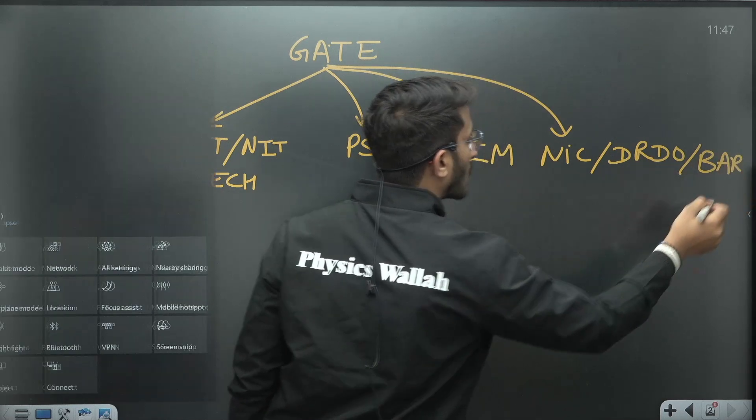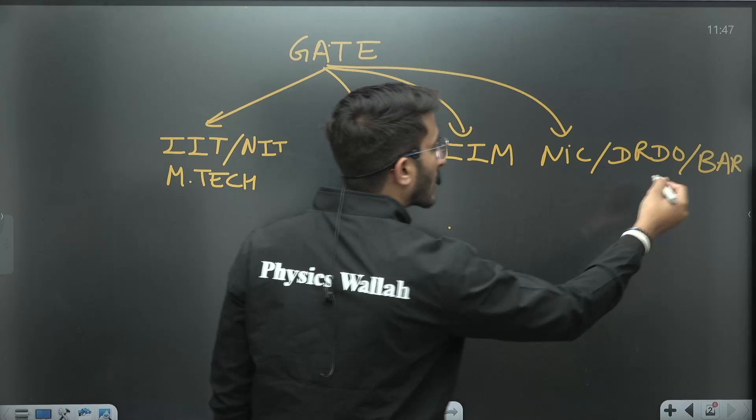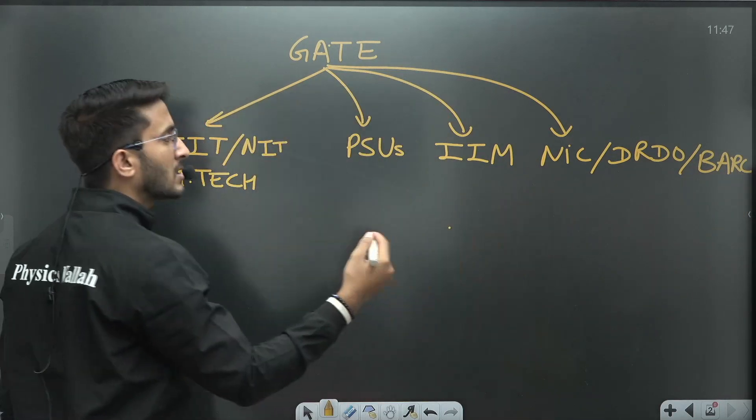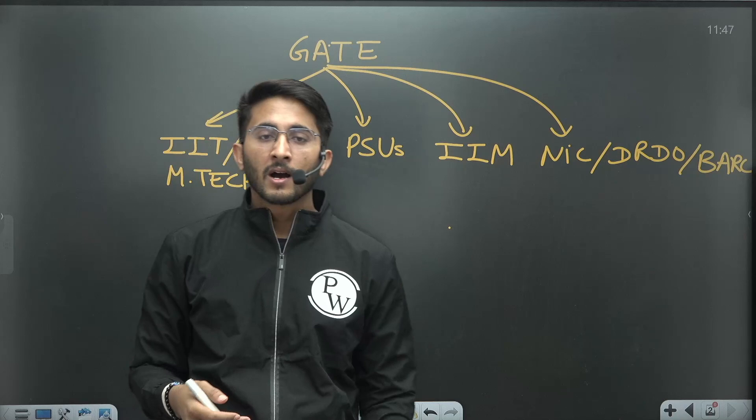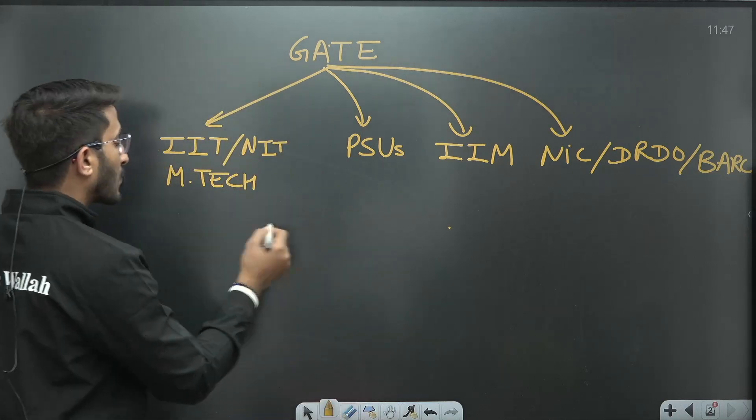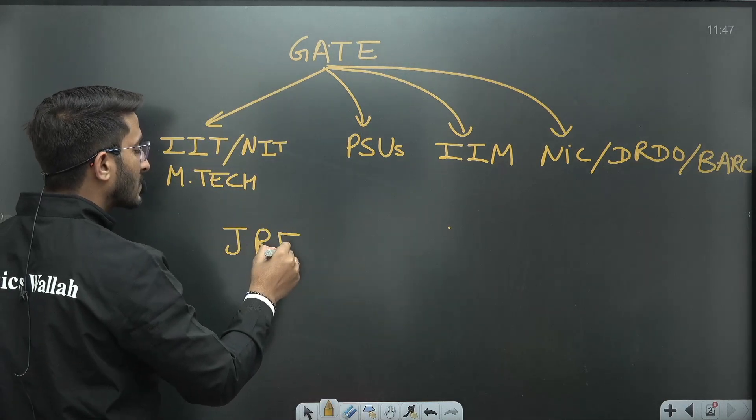You also have the option to join various scientist jobs like NIC, DRDO, BARC, or many others like NALIT. Various organizations release their scientist posts on the basis of GATE scores.